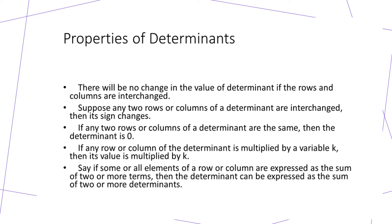Another property: if any row or column of the determinant is multiplied by a constant k, then its value is multiplied by that constant. Also, if some or all the elements in a row or column can be expressed as a sum of two or three terms, then the determinant can be expressed as a sum of two or more determinants.